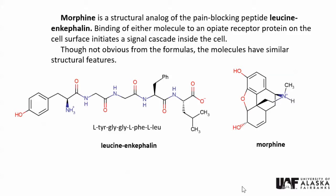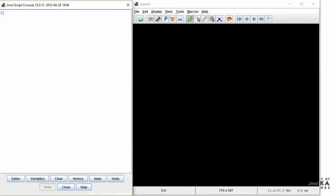To demo this process, we will consider the molecules morphine and leucine enkephalin. Binding of either molecule to an opiate receptor on the cell surface initiates a pain-blocking signal cascade inside the cell. Though not obvious from the formulas, the three-dimensional structures of the two molecules are similar.